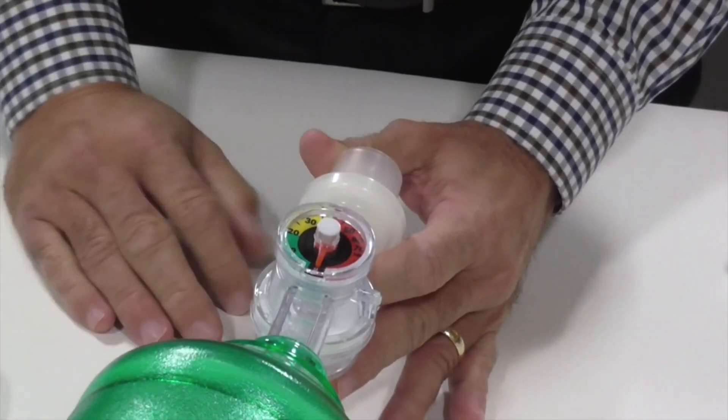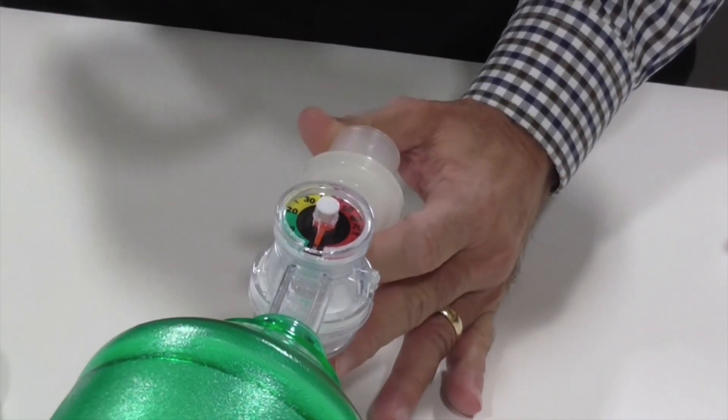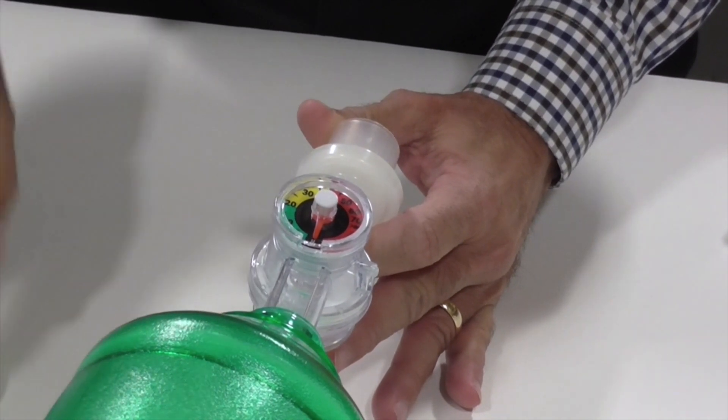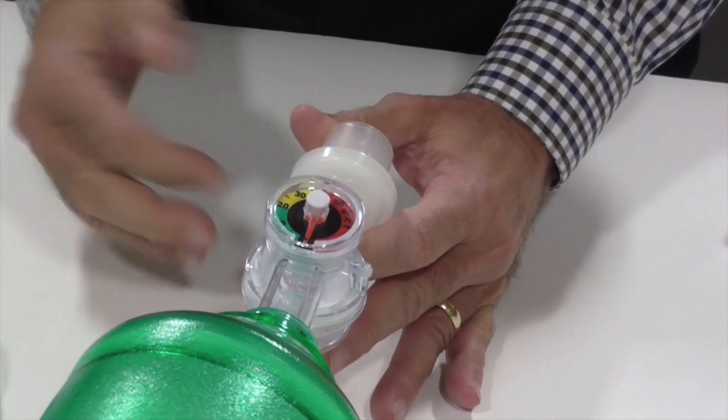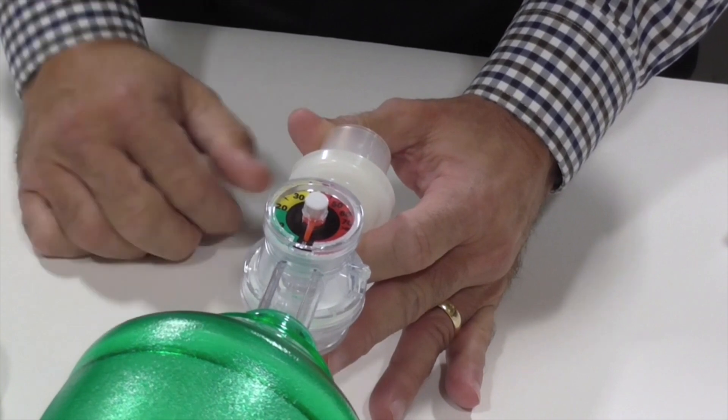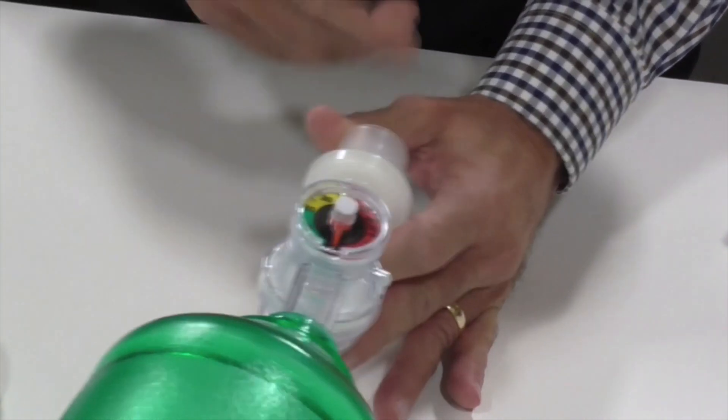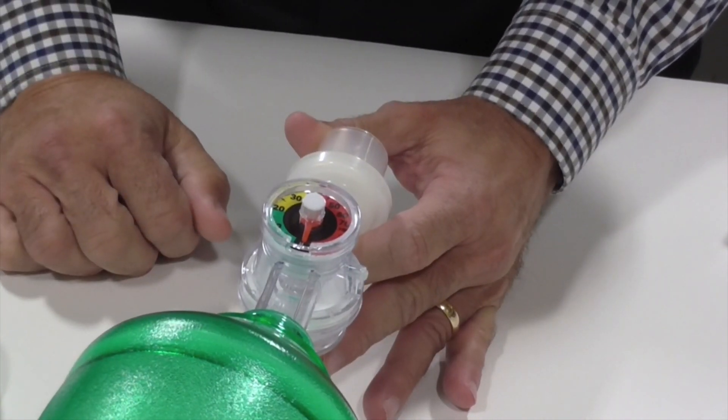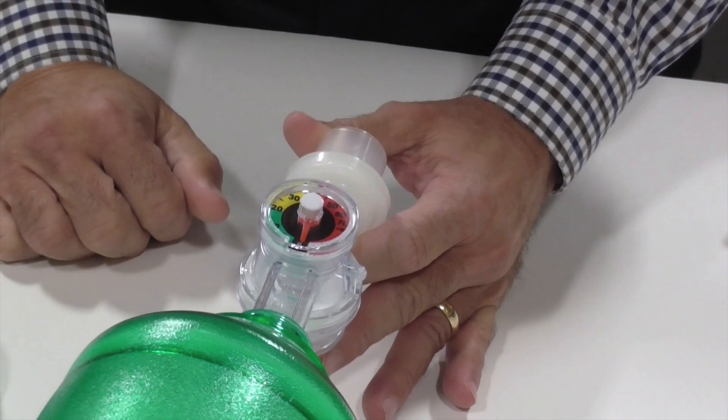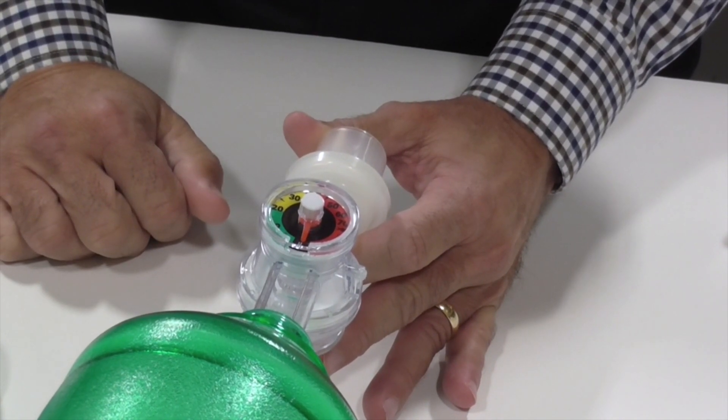The manometer is going to tell you how much pressure you're bagging with, which is very important, especially if I'm mask bagging a patient. This will help me prevent gastric insufflation, which can cause vomiting and aspiration. So I can limit how much pressure I'm using during mask ventilation.